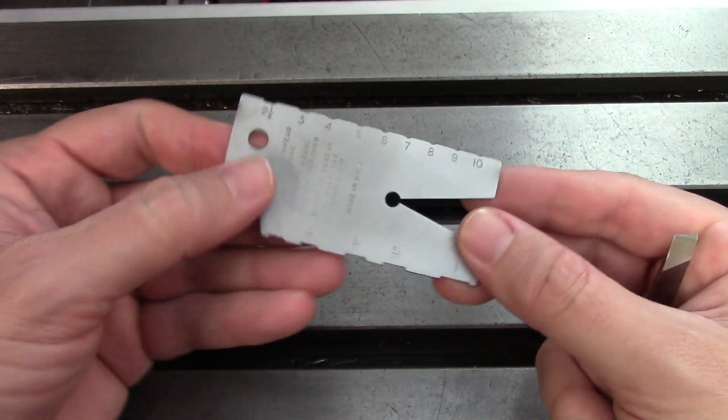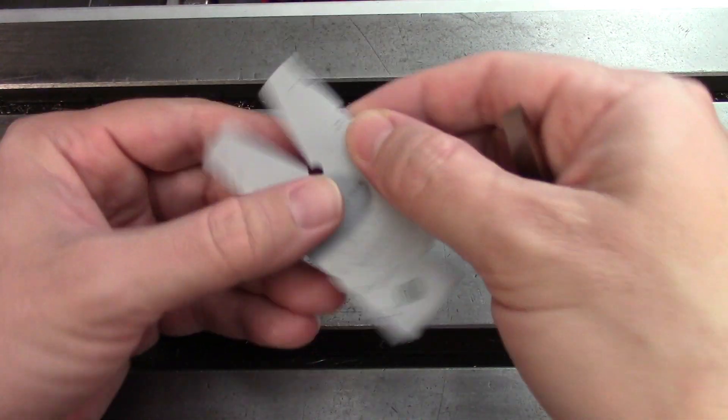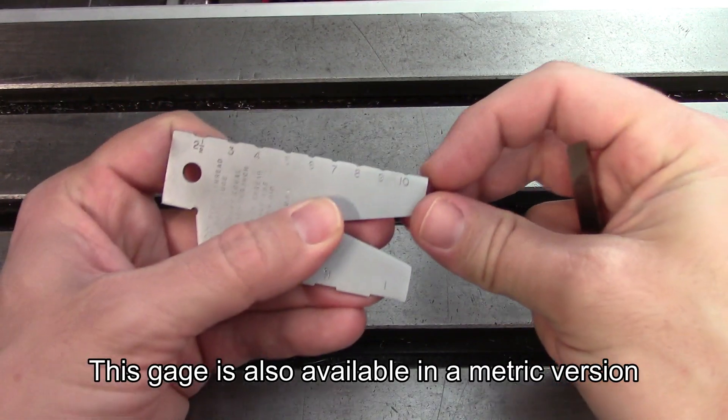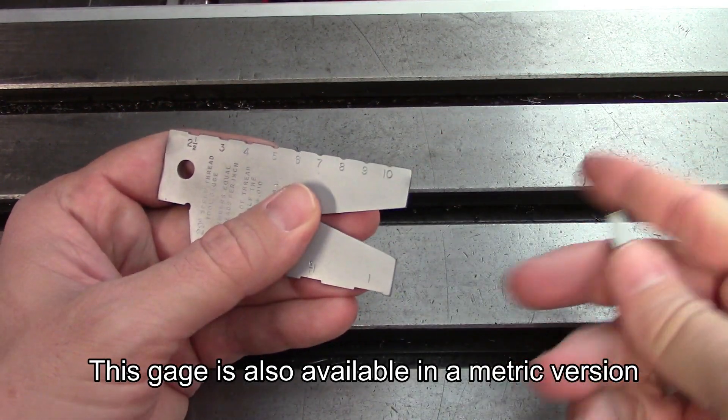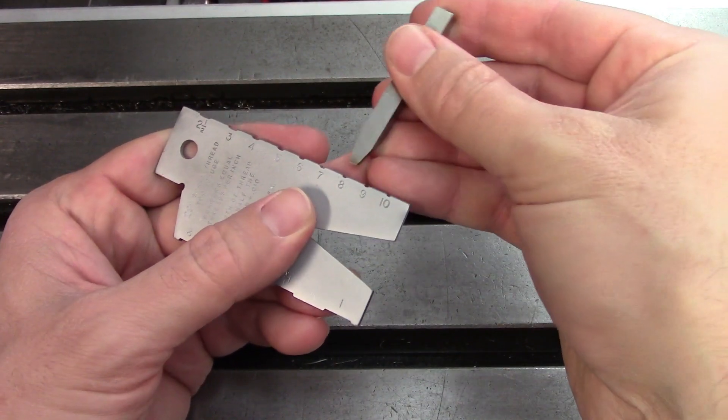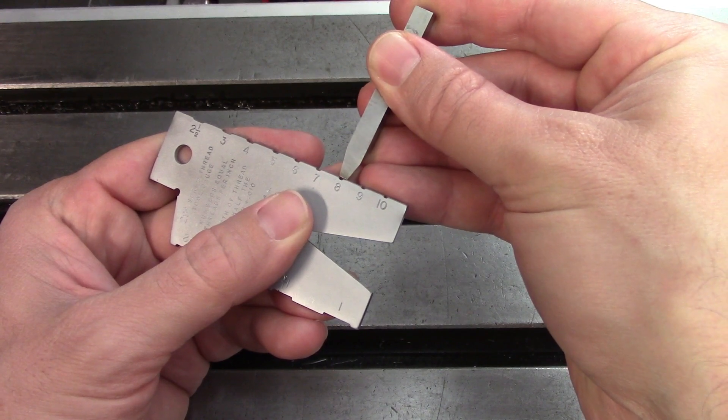In practice with using one of these you would look for which thread pitch you are looking to cut. This does from one thread per inch all the way up to ten threads per inch. If you wanted to cut eight for instance you would just need to grind your tool so that the flat corresponded with that notch. Nice tight snug fit.